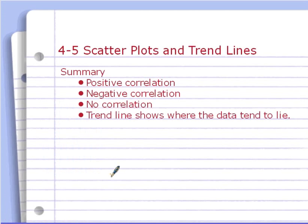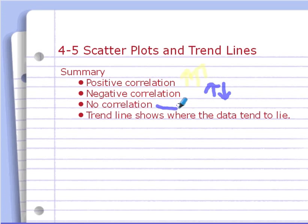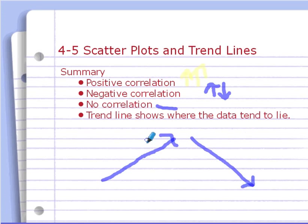To summarize: we looked at scatter plots. Positive correlation means both data sets are going up. Negative correlation means one data set goes up and the other goes down. No correlation means there's just no relationship. A trend line connects the points and helps you see where the data is going — it can show a positive or negative correlation. If you have no correlation, the trend line won't help you. Bring any questions you have to class. Thank you very much.